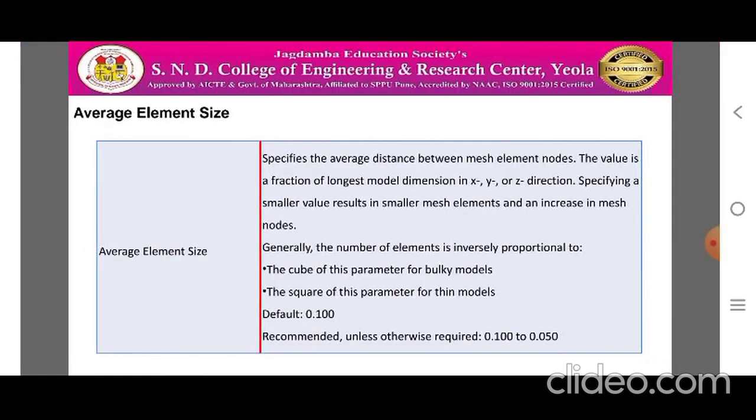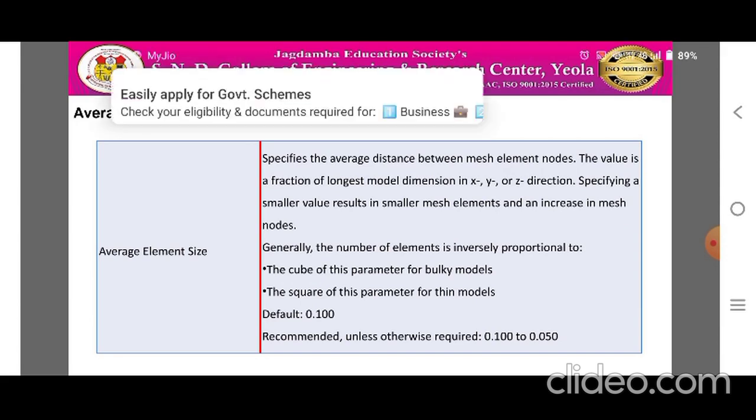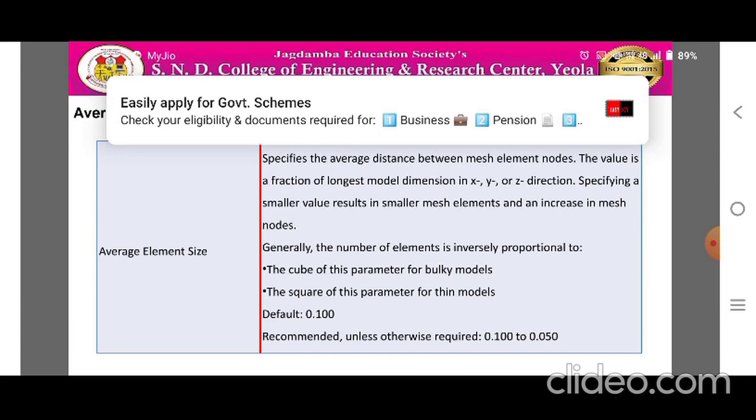Average element size. This specifies the average distance between the mesh element nodes. The value is a fraction of longest model dimension in X, Y, or Z direction. Specifying a smaller value results in smaller mesh elements and an increase in mesh nodes. Generally, the number of elements is inversely proportional to cube of this parameter for bulky models, to the square of this parameter for thin models. By default it is 0.100, the recommended unless otherwise required is 0.1 to 0.05.